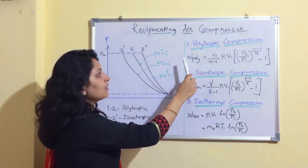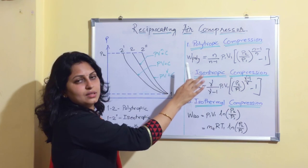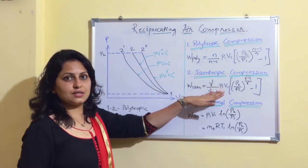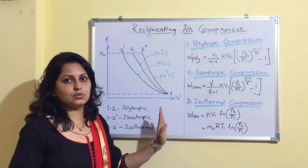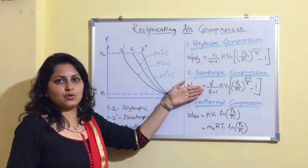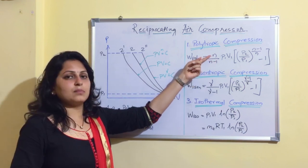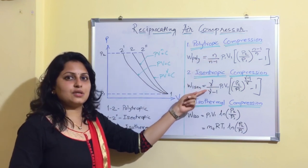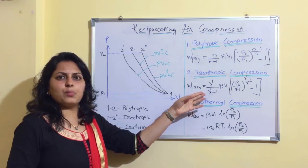We can see the formulas for work input: polytropic compression work input, isentropic compression work input, and isothermal compression work input. The difference between polytropic and isentropic compression is the index used — N is used in polytropic compression and gamma (γ) is used in isentropic compression. The value of gamma is usually 1.4. This diagram is really important, and these formulas are helpful while solving problems.